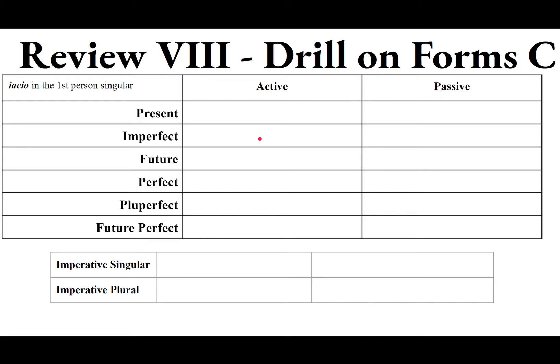For the imperfect, take the present stem IACI, add E before the BA — because it's a third IO — giving IACIEBAM: I was throwing / I used to throw. In the passive, exchange the M ending for R: IACIEBAR, I was being thrown / I used to be thrown.